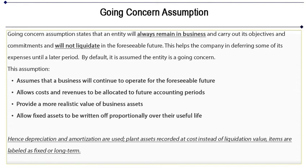The going concern assumption allows costs and revenues to be allocated to future accounting periods, provides a more realistic value of business assets, and allows fixed assets to be written off proportionately over their useful life — hence depreciation and amortization are used. Plant assets are recorded at cost instead of liquidation value, and items are labeled as fixed or long-term.